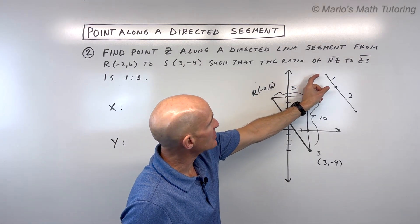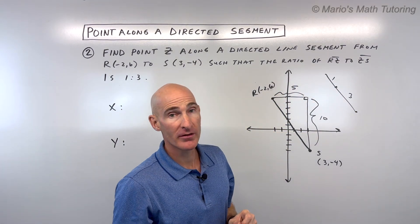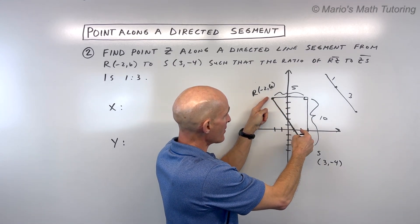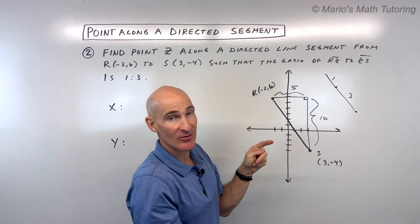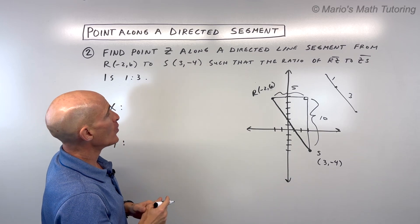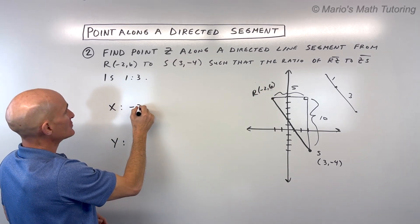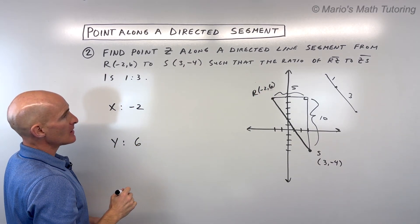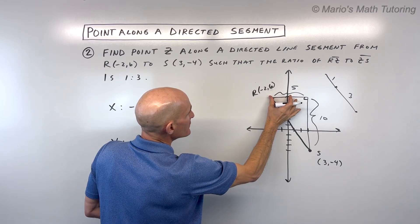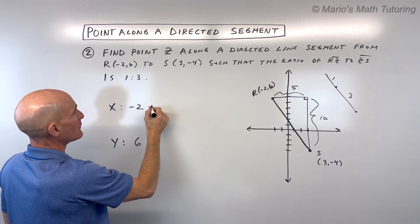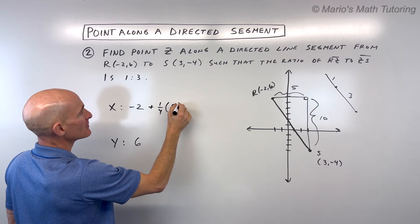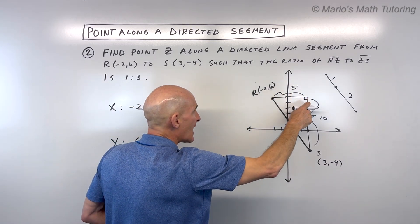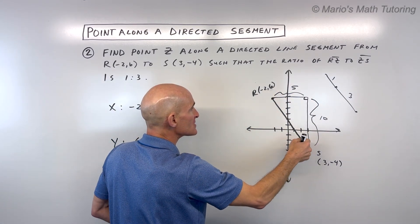So what that means is that we're actually going 1 fourth of the way from R to S. 1 fourth. So let's start at point R, which is negative 2 and 6, but we're going 1 fourth of this horizontal distance. So we're going to say plus 1 fourth times 5.